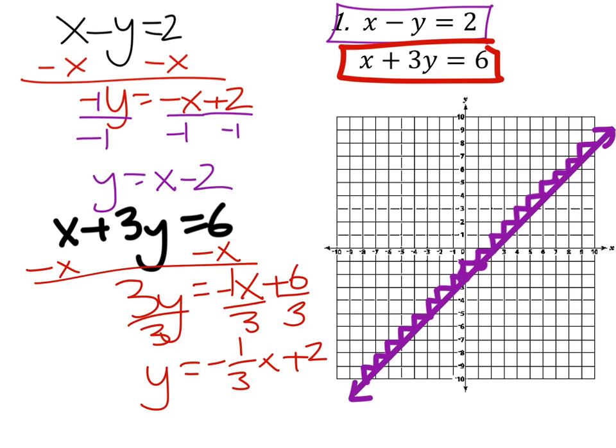So now that we have that equation, let's go ahead and start graphing that. We'll start at the y-intercept at 2 right there. And our slope is down 1 and to the right 3, which has already intersected that line.